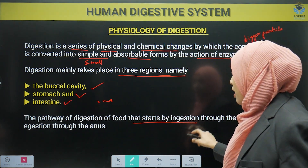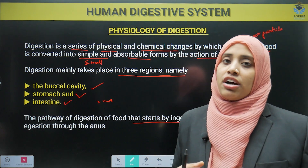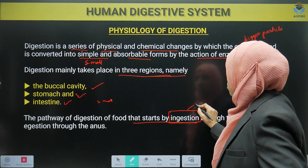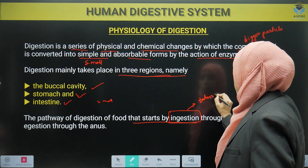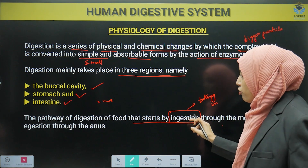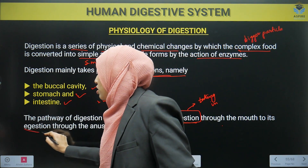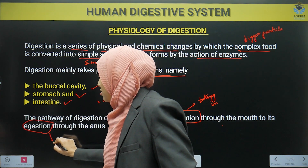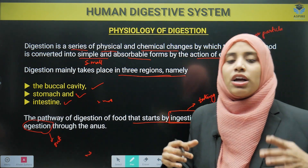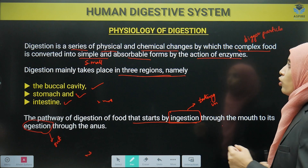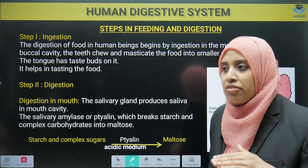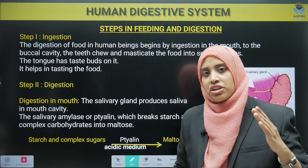The pathway of digestion starts with ingestion — taking in food — and ends with egestion — removal of waste from the body. This is the whole pathway of the digestive system. Let's see step by step the digestion in different organs: what digestion happens in your mouth, in the stomach, and in the intestine, and what enzymes help in each.